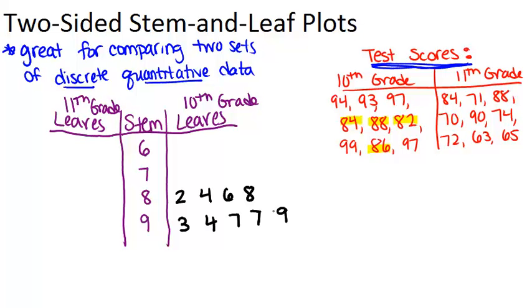Now we're going to do the same thing for the 11th grade, but we'll just put it on the other side. So for the 11th grade students, we had in the 60s, 63 and 65. So we can start with a 3 and a 5 out here. Notice that the smallest number, the 3, was closest to the stem, just like it was on the other side, so it's sort of the mirror image idea. Then for the 70s, we have 70, 71, 72, 74. And then we have two in the 80s, 84 and 88, and one in the 90s.